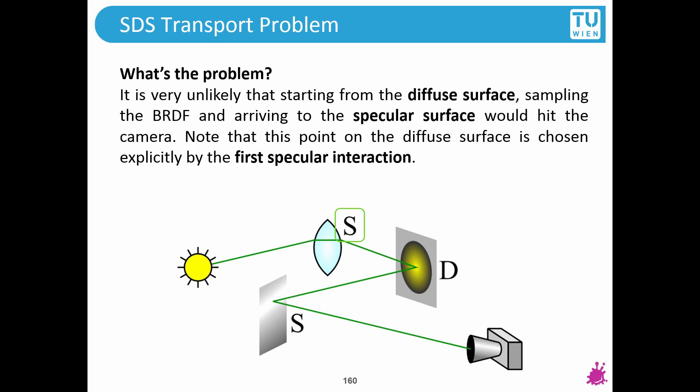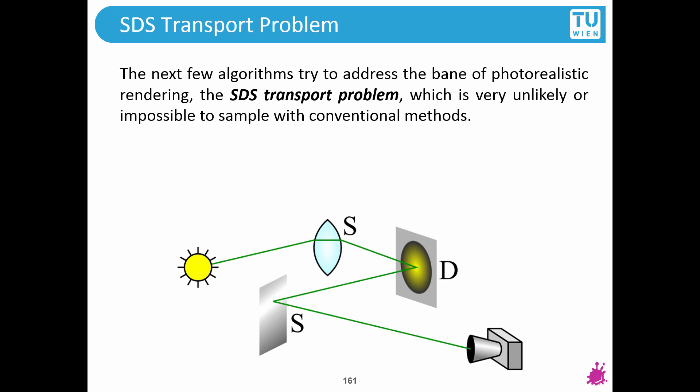Now you can hopefully see that this means that depending on the material models, if we have perfect specular interreflections, then sampling such a light path is impossible.